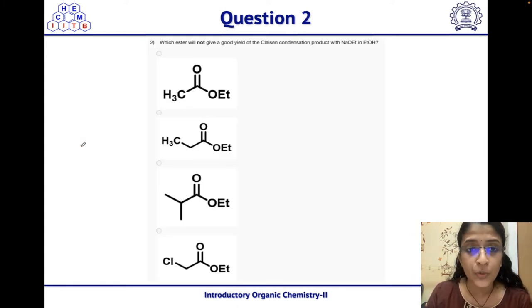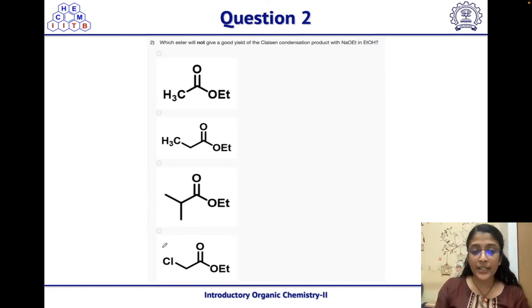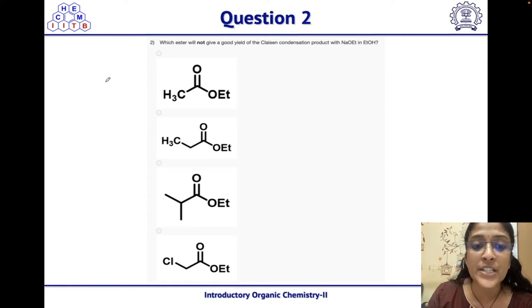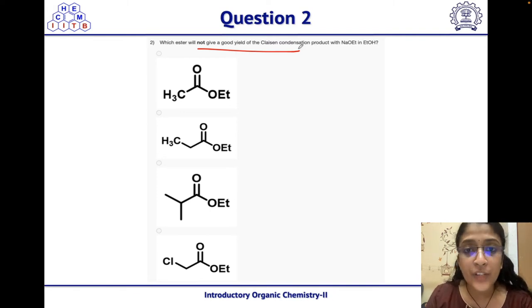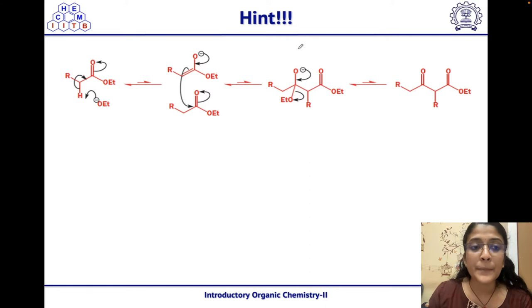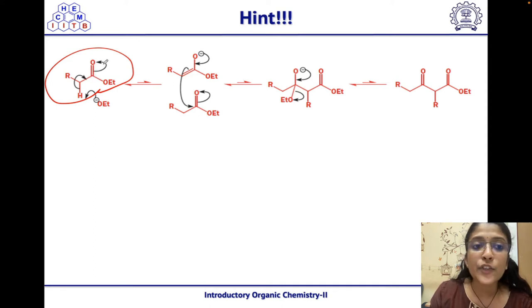Question 2: Which ester will not give a good yield of the Claisen condensation product with NaOEt in ethanol? We first examine the mechanism. The ester has an alpha hydrogen; ethoxide (the base) abstracts it, electron density shifts, and the enolate forms. The enolate undergoes self-condensation: the O⁻ falls back, the carbon–carbon double bond attacks another ester carbonyl, the tetrahedral intermediate collapses with loss of ethoxide, giving the Claisen product. However, this reaction is in equilibrium favoring starting material.